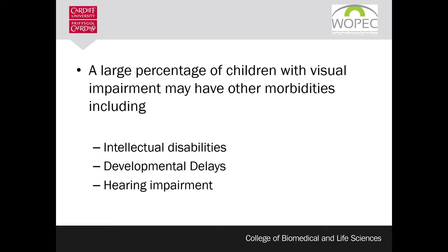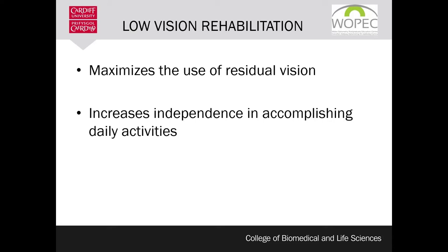The truth is, by the time you find someone with low vision, there is little you may be able to do to reverse the condition — except in cases of refractive errors, cataract, and some other surgical interventions. However, there is a lot that can be done to maximize the use of the vision that the person still has and to help increase their independence in the performance of daily activities. This is the knowledge we will try to acquire as we go through this course.